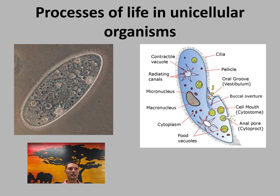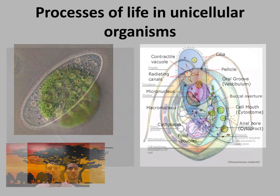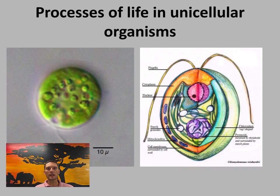If you collect pond water, you can often find paramecia. This is an example of a unicellular organism maintaining its existence using the different functions of living organisms.